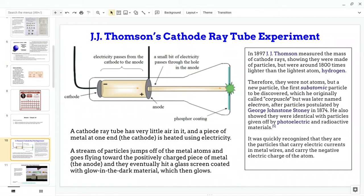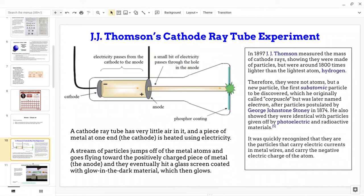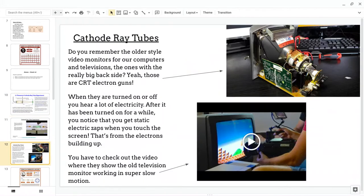He was a scientist, and he came up with something called a cathode ray tube experiment. So what is a cathode ray tube? So first, you've actually seen them before.